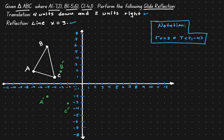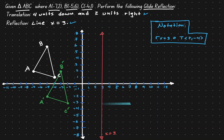Let's connect those translated points. Now to perform our glide reflection, let's reflect this green triangle over the line x equals 3. We draw our vertical line passing through x equals 3. Starting with C': it is five units away from the vertical line, so after the reflection it should be five units away on the opposite side, giving us the location (8, -3).